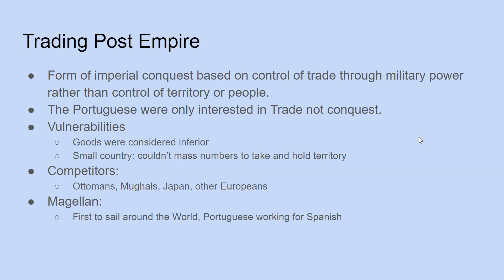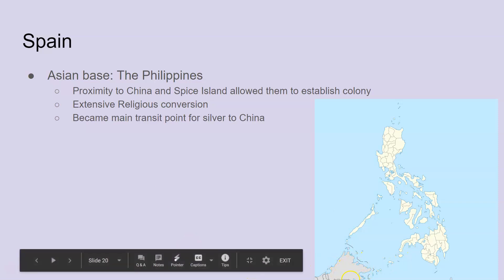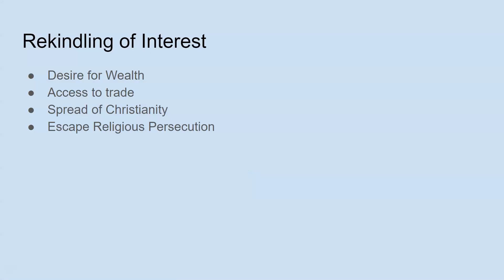The Philippines, where Magellan was killed, became a Portuguese base ideally situated between China and the Spice Islands. The Philippines were allowed to establish a colony, partly due to extensive religious conversion of the population. The capital city of Manila eventually became a major transit point in the silver trade — something we spent time on with the DBQs earlier in the year.